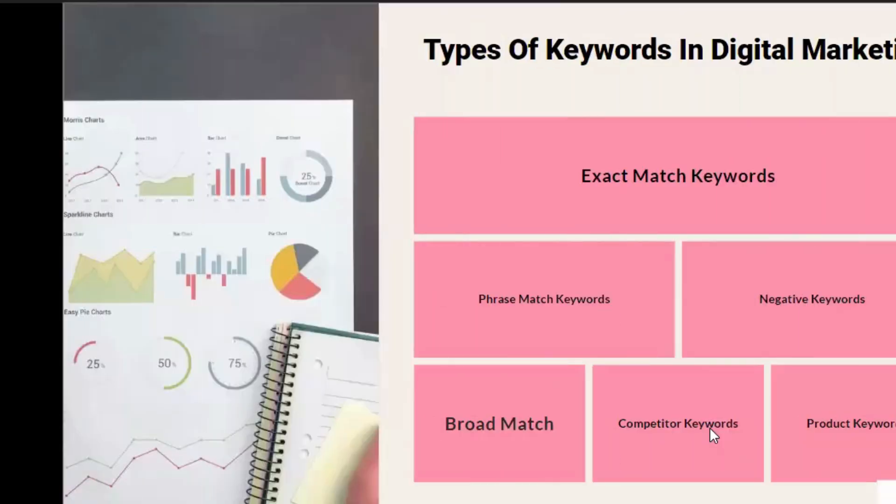Competitor keywords also, and product keywords also. Competitor keywords we will see in our practical part when we generate our keywords and it will show the popularity in that country. That is the competitor keywords. We will see that in our practical.